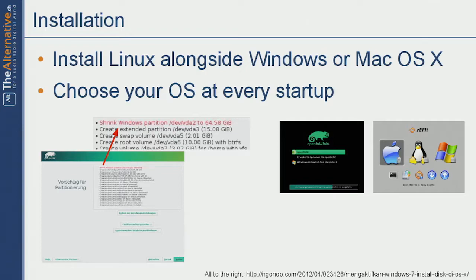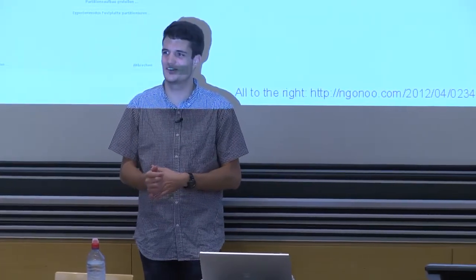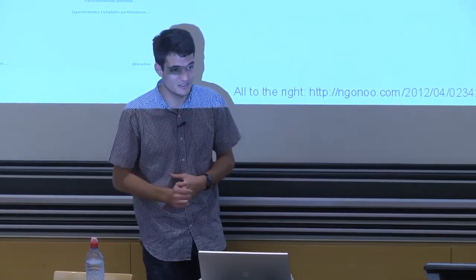Once you have installed it alongside your existing OS, you can choose from a boot menu. When you start up instead of the Windows logo, this bootloader pops up and you choose OpenSUSE or Windows. Both are completely uncoupled — they have nothing to do with each other. On a Mac it looks different — that uses software called rEFIt, and it's harder to install on a Mac, but we have experienced people for that. It's like having two computers in one. If one is killed by a virus — typically not the Linux part — the other is completely independent.